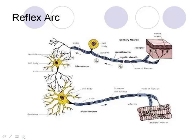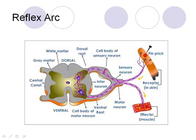Here's a visual example of the reflex arc: a sensory organ receives an input, sends it up the dendrite, through the cell body, and out the axon. Then into the interneuron — dendrite, cell body, axon — and finally out the motor neuron to an effector, in this case skeletal muscle causing a contraction.